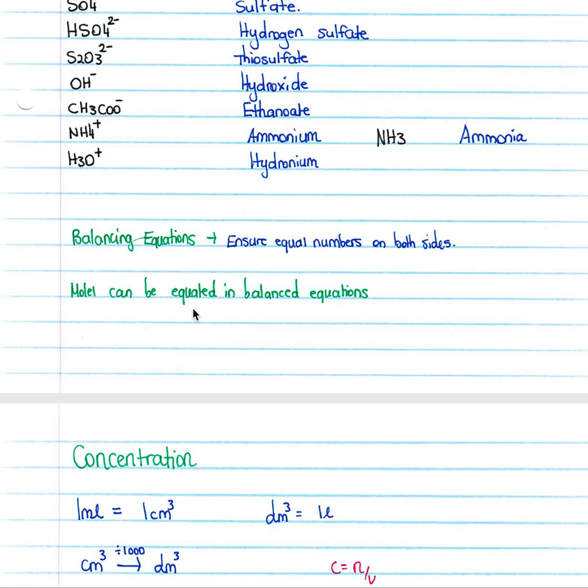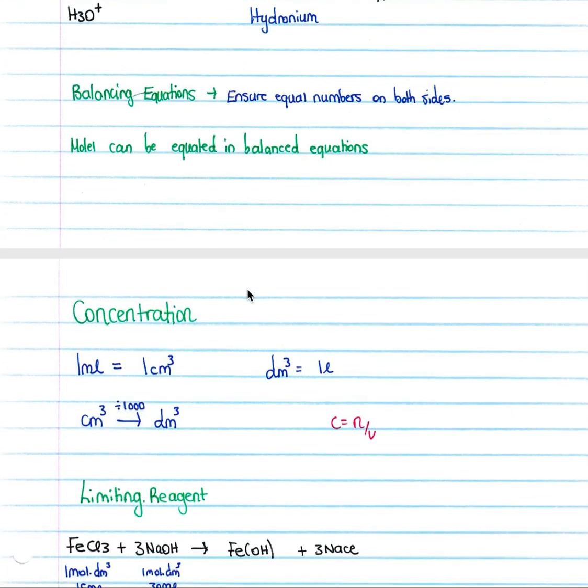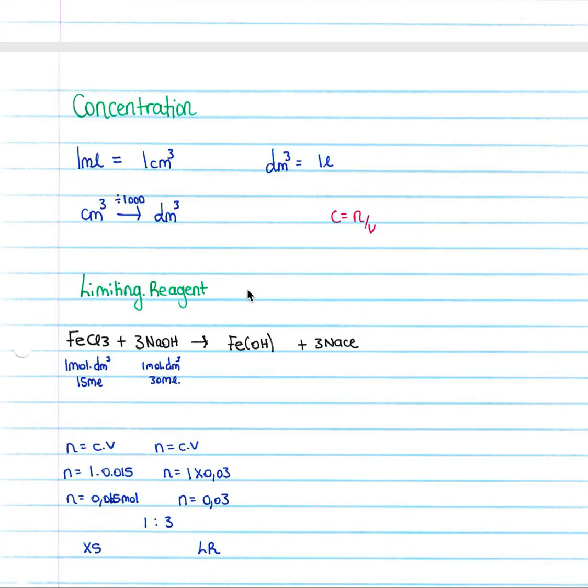Then we look at concentration. We know that concentration is equal to n over v, n being moles and v being volume. And we know that often they will try and trick us. They will give us our volume in milliliters.